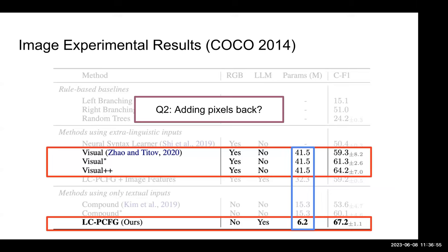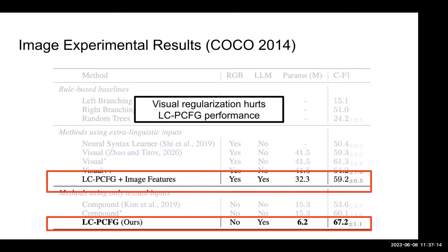We add another question: what if we add the pixels back? When we learn text-only we get strong performance, but adding pixels back turns out that additional visual grounding might hurt LCPCFG performance. We assume this is because combining text and visual training may need more training strategies, more hyperparameters, and more training runs. Although we tried very hard, the visual information seems not to help much.